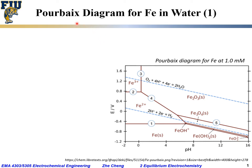Let's take a look at an example: the Pourbaix diagram for iron in water, which we have covered before. This Pourbaix diagram for iron in water includes the ionic species iron 3+ and iron 2+, all at 1.0 millimolar per liter.